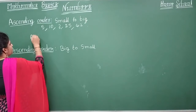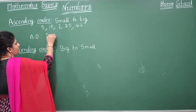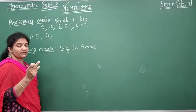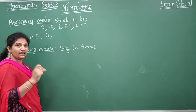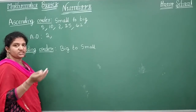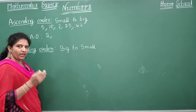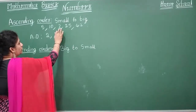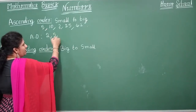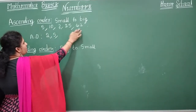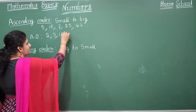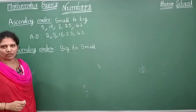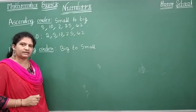Let's start arranging in ascending order: 2. Next smallest — you look at single digit, double digit, triple digit, as we discussed in greater than and less than. First go with single digit numbers: 2, then 5. Next come the two-digit numbers. Which is smaller? 10 is smaller, then 25, and then 42.